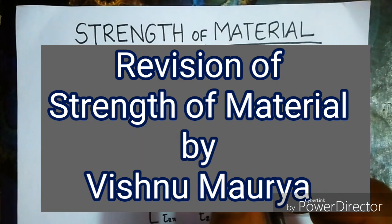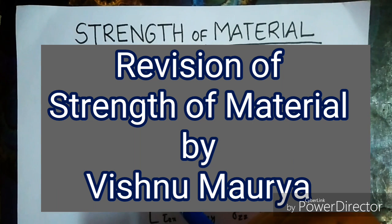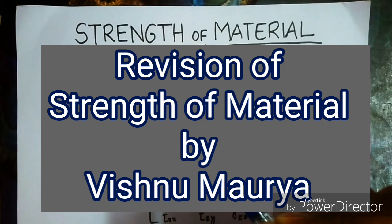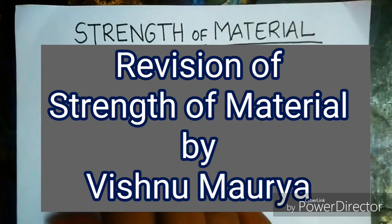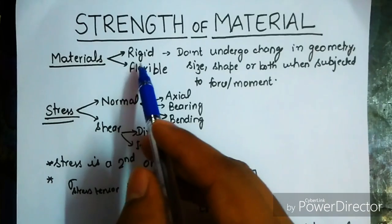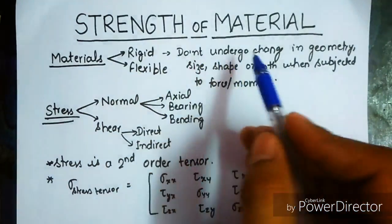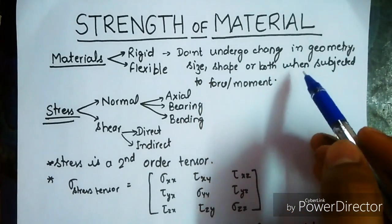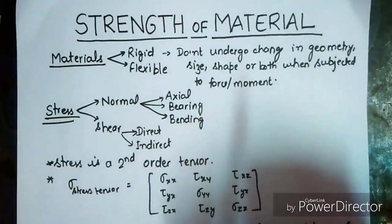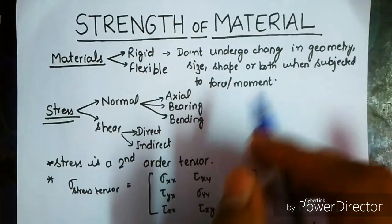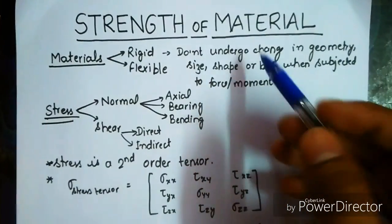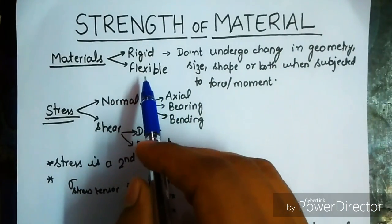In this video we are going to revise the subject Strength of Materials. This video includes the basic formulas and concepts necessary to be memorized for competitive purposes. Materials are of two types: rigid or flexible. Rigid material does not undergo any change in geometry, size, or shape when subjected to a force or moment. Flexible material is vice versa.